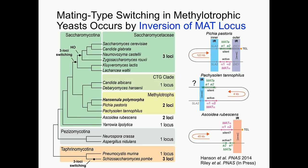It turns out Hansenula polymorpha is not a one-off. We've looked at other species within the methylotrophs, including Pichia pastoris and Pachysolen tannophilus, as well as an early-diverging species within Saccharomycotina called Escudia rubescens, and we found similar two-locus flip-flop mating type switching systems due to recombination between inverted repeats in all of these. This tells us this is an early-arising system with fewer components — a simpler system upon which the complexity we see in Saccharomyces cerevisiae was built.